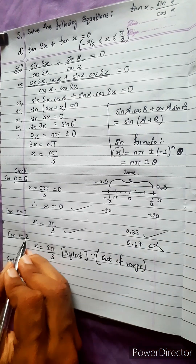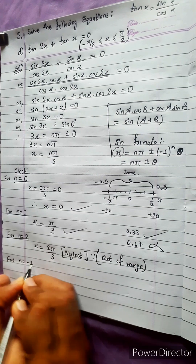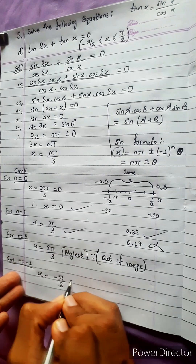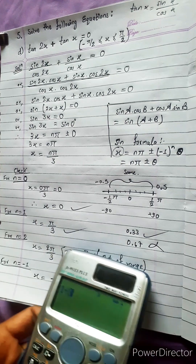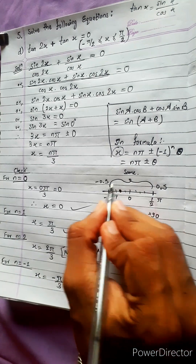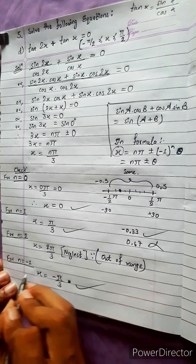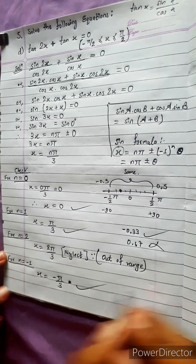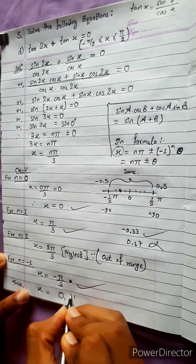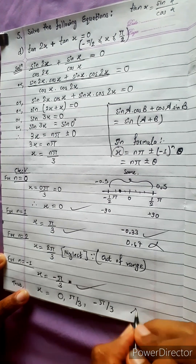We will not go for n equals 3 as it will be out of range. For n equals −1: x equals −π/3, approximately −0.33, which also lies in the range and satisfies. We will not go for n equals −2 as it will be out of range. So the three values of x are: 0, +π/3, and −π/3. The answer is absolutely correct.